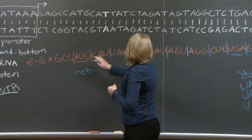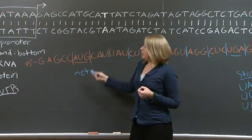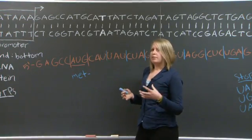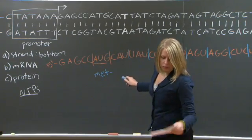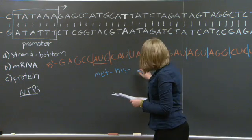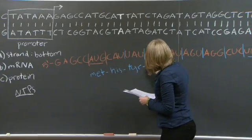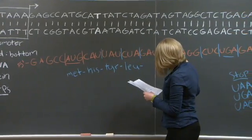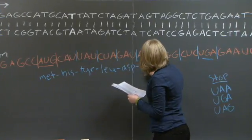So what my ribosome is going to be doing as it's reading these codons is it's going to insert amino acids by amino acids, pairing them together with a peptide bond. So we've got methionine, methionine bonded to histidine, tyrosine, leucine, and so on and so forth.